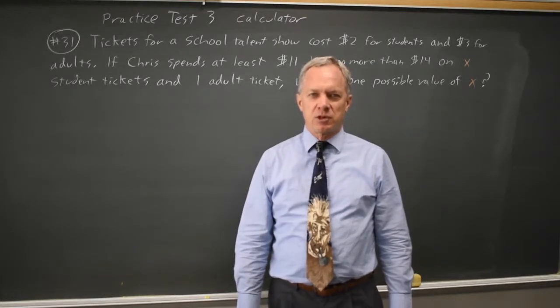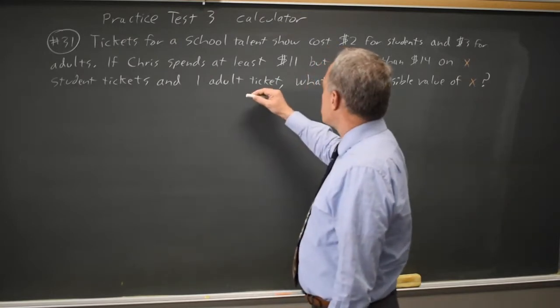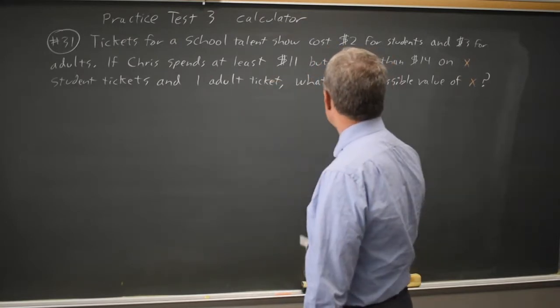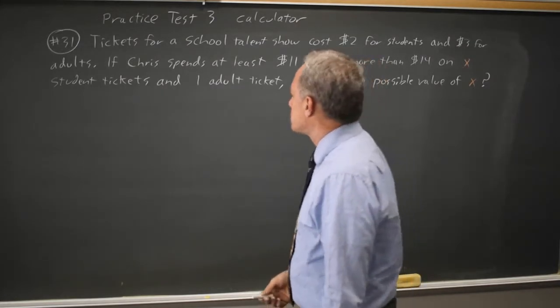This is calculator question number 31. We're told that student tickets are $2, adult tickets are $3, and Chris spends at least $11 but not more than $14 for X student tickets and one adult ticket.